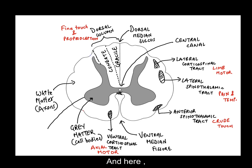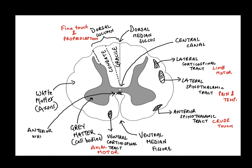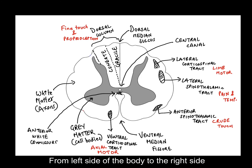Here we have the decussation of tracts known as the anterior white commissure. A decussation is where axons cross from the left side of the body to the right side, or vice versa.